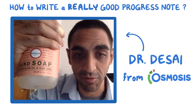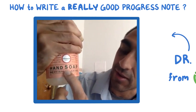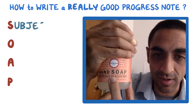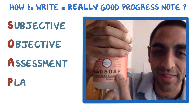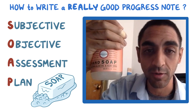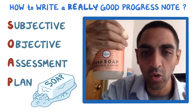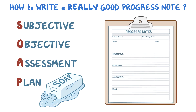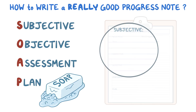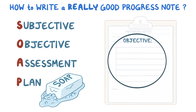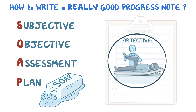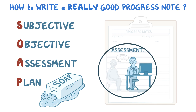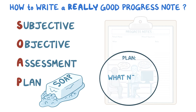If you've written a note before, you know why I'm holding this up — S-O-A-P: Subjective, Objective, Assessment, and Plan. Soap notes are what we call them sometimes. The subjective is what a patient tells you. Objective is what you determine through physical exam, labs, or imaging. Assessment is your thought process — what do you think is going on. And a plan is just that: what are you going to do next? This is a SOAP note format and it's pretty universal.